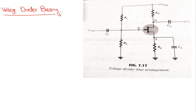In this video we are going to study the voltage divider biasing configuration of the N-channel junction field effect transistor. You can see the voltage divider biasing configuration on your screen. For DC analysis, C1, C2, and CS are all going to be open circuits. These coupling capacitors are to be replaced by open circuits, so I'm going to replace each of them by an open circuit.